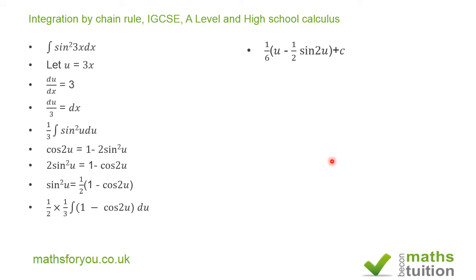And that will give us 1 6th, and if you integrate 1 you get u, 1 6th times u minus a half sine 2u plus an integration constant of c.